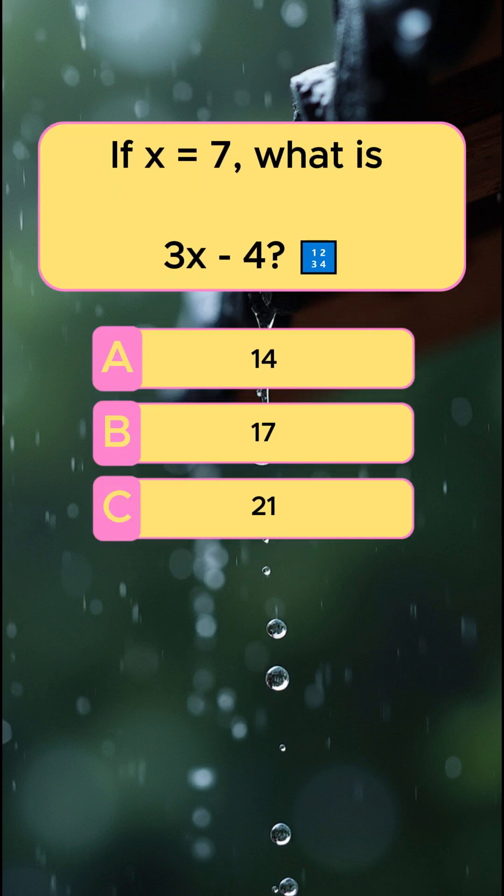If X were 7, what is 3X plus 4? The answer is 17.